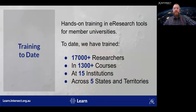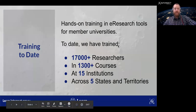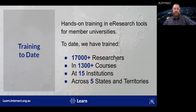One of the main services we provide at Intersect is training in various research technologies. These are delivered both in person and online, and our interactive hands-on training is designed to improve research productivity and support world-class research by imparting e-research skills and support to researchers. Since 2008 we've delivered over 1,300 of these research technology courses and had over 17,000 attendees across our 13 member universities and research organizations.